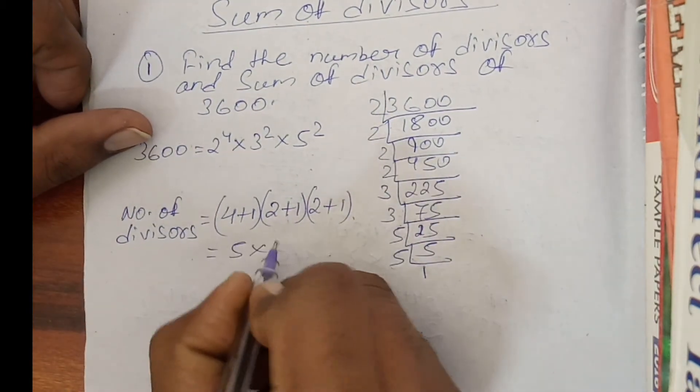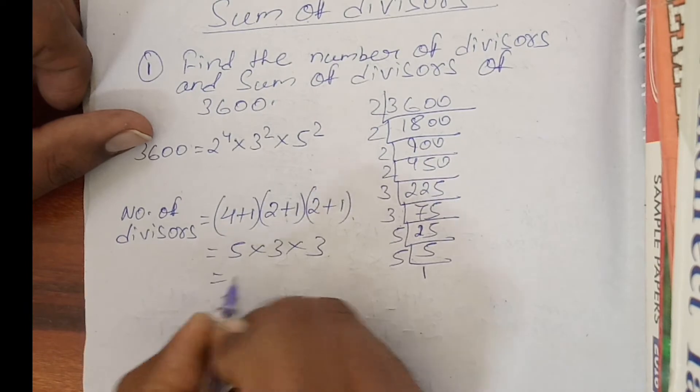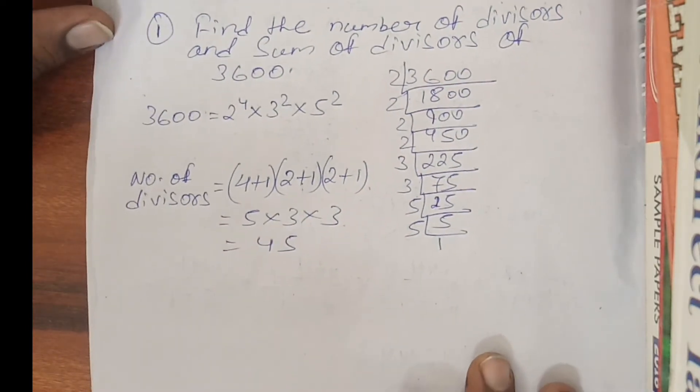So 4 plus 1 is 5, times 3 times 3 equals 45. This is the number of divisors.